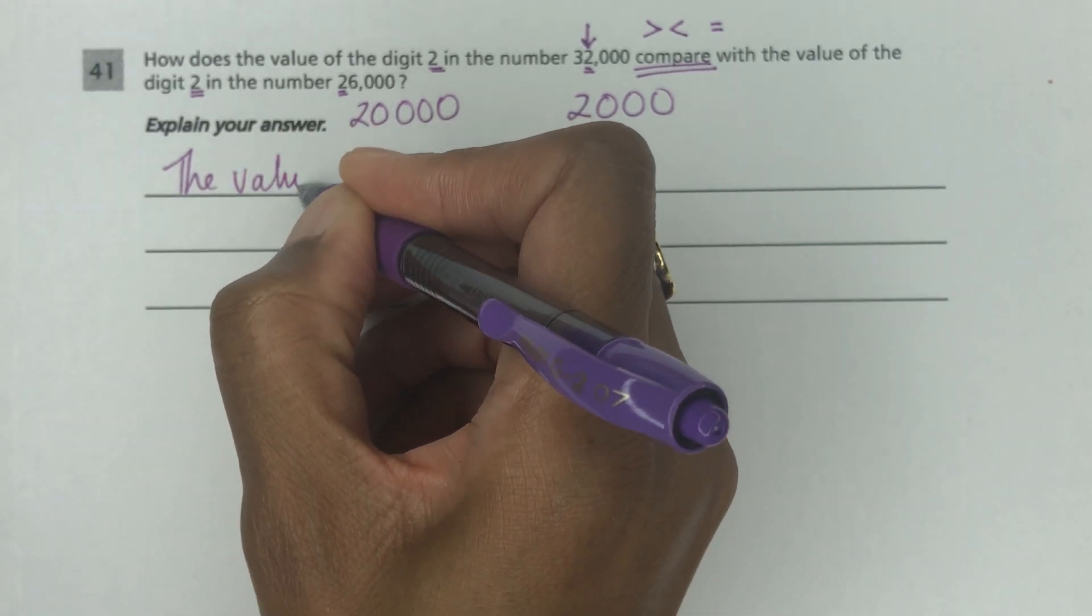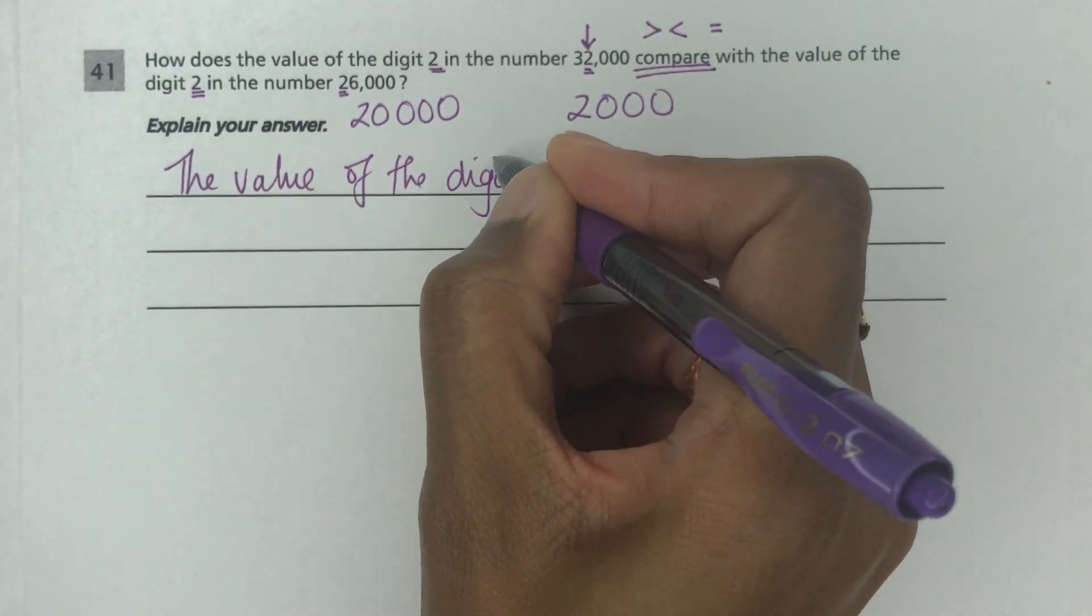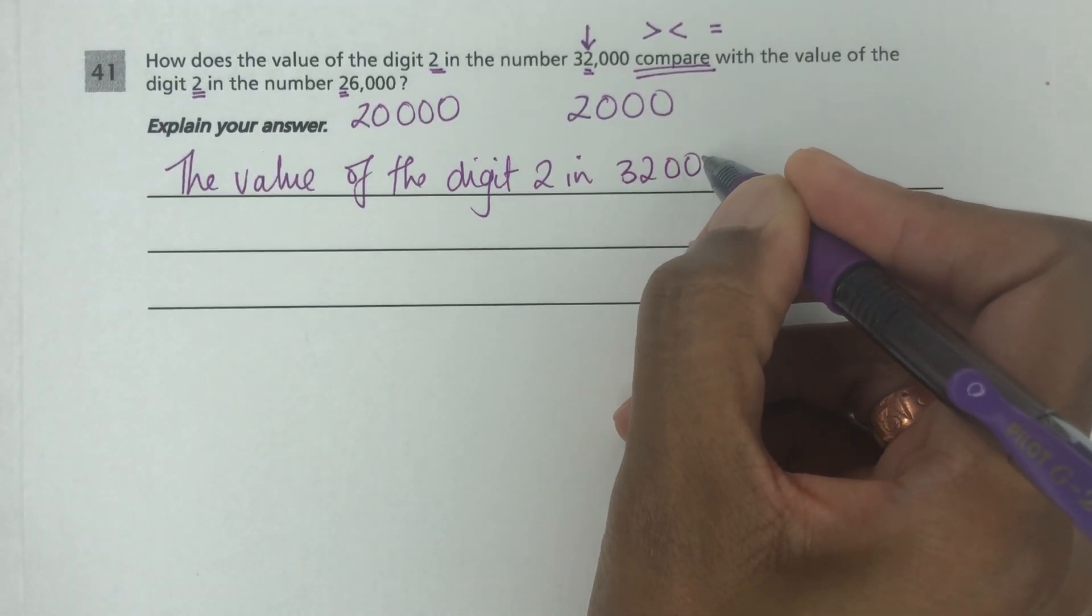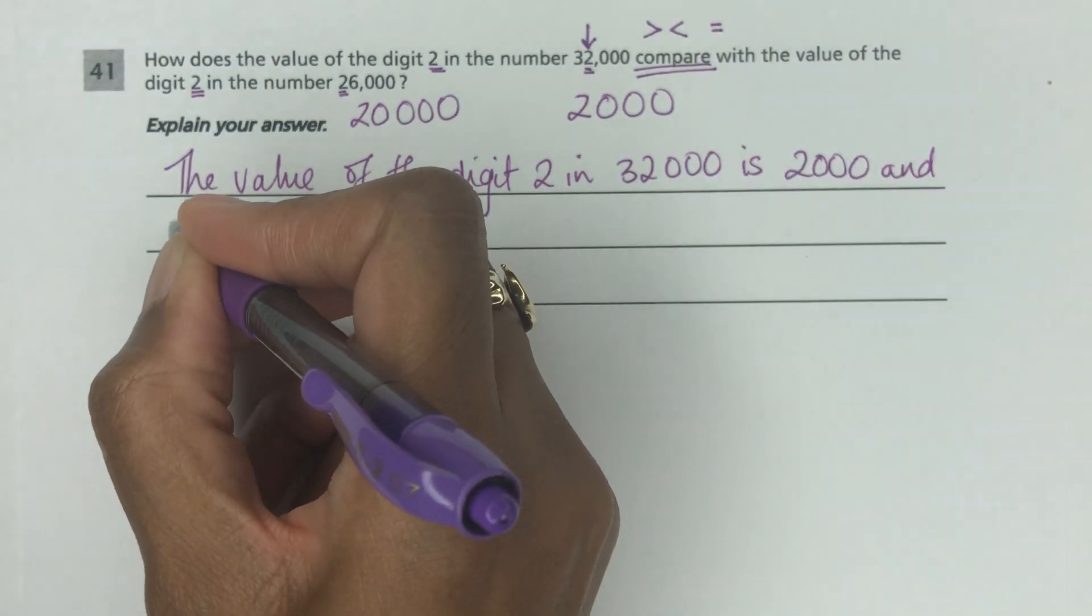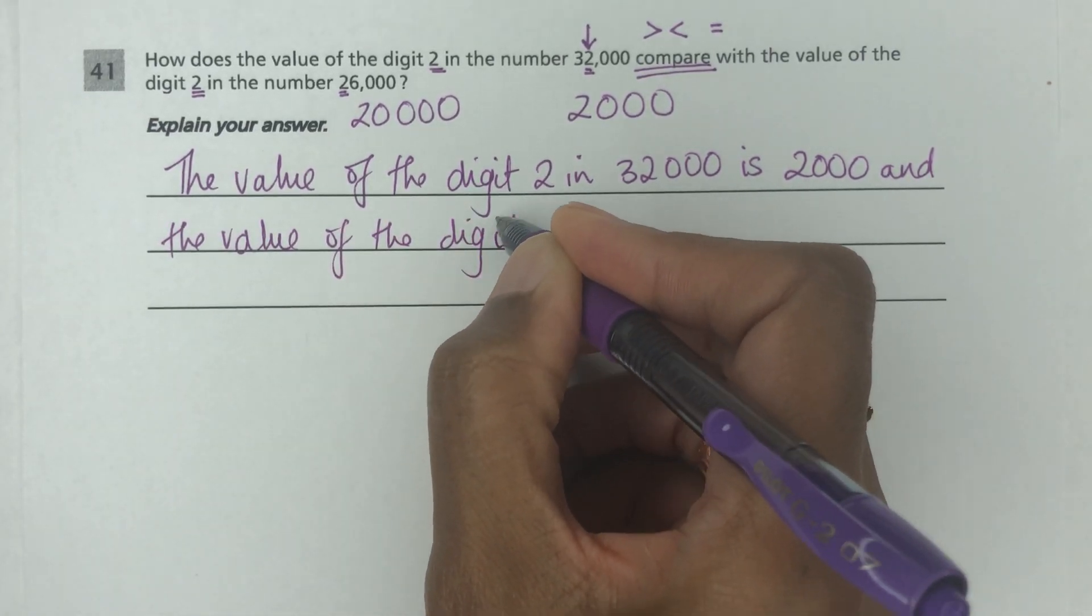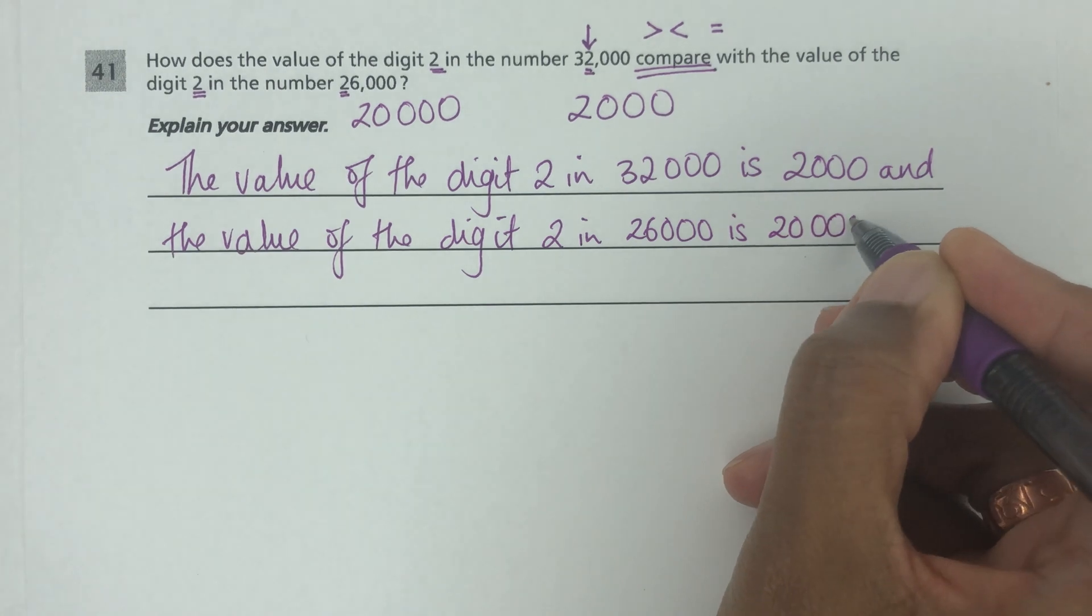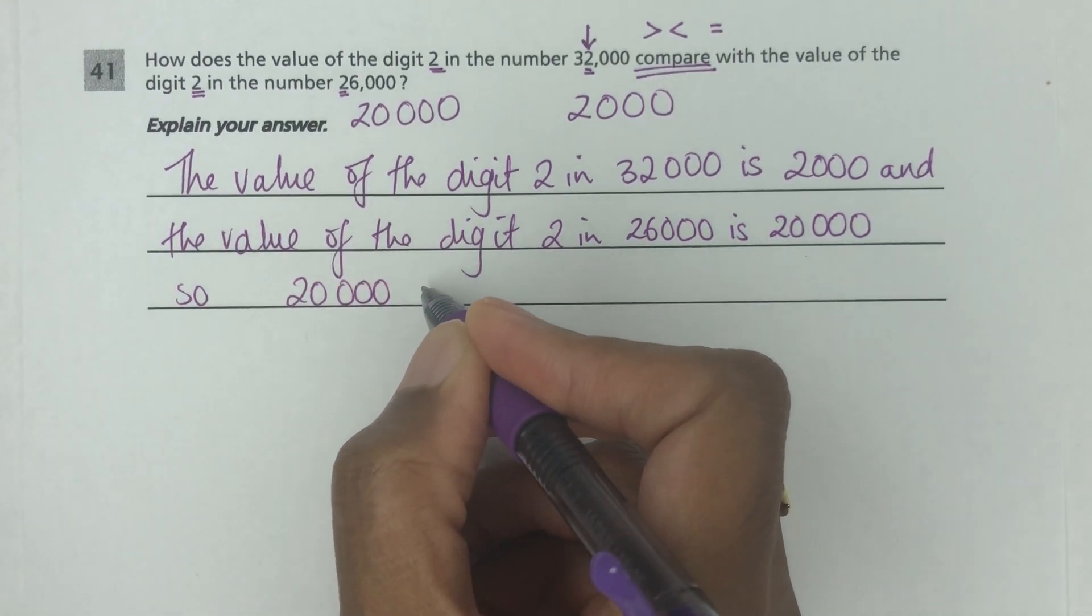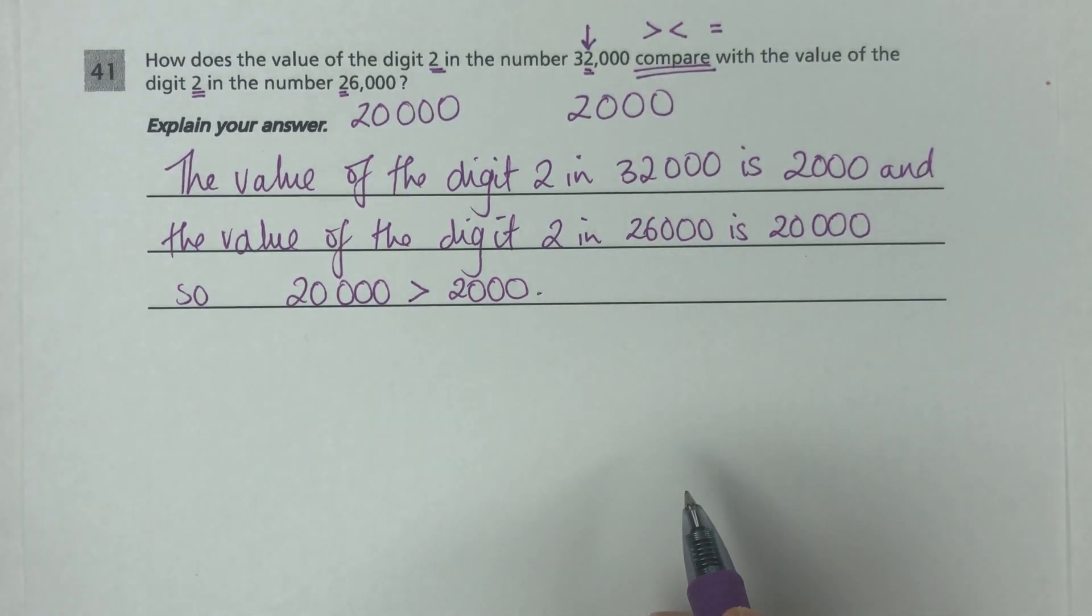You can say here, the value of the digit 2 in the 32,000 is 2,000, and the value of the digit 2 in the 26,000 is 20,000. So 20,000 is more than 2,000.